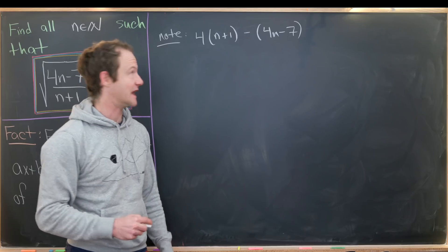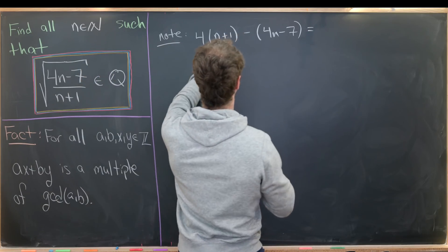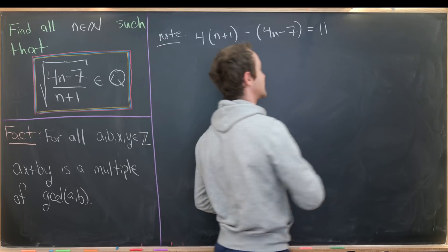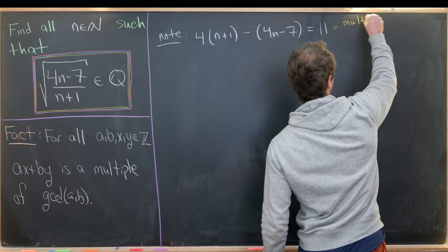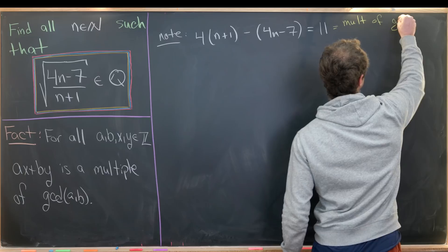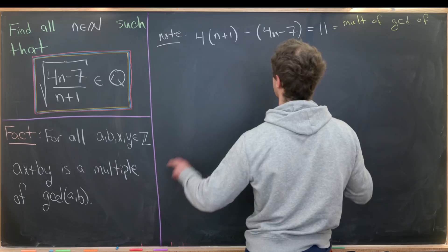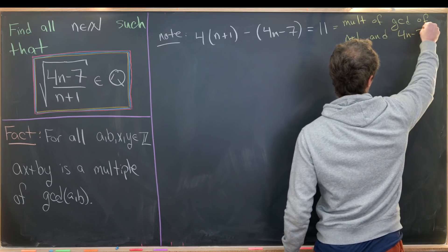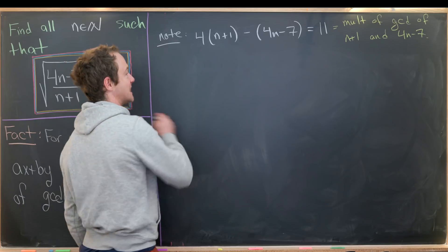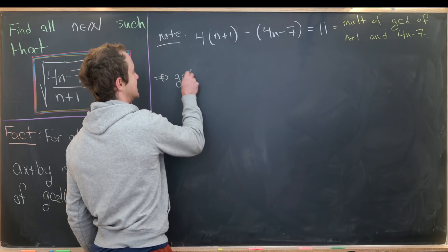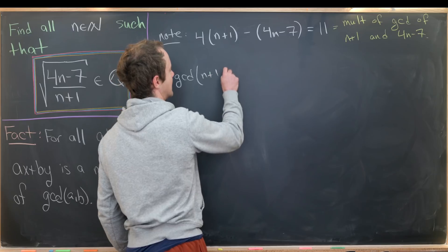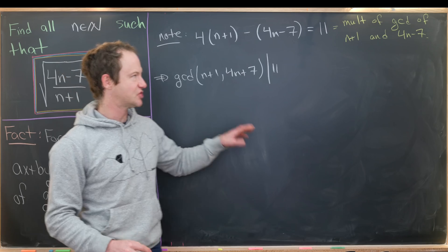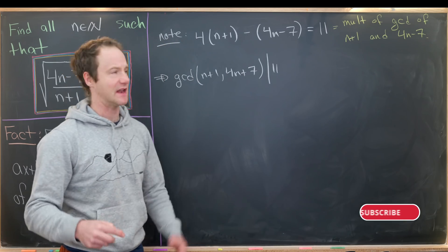which is the same thing as adding (4n-7) times negative 1, what will we get? We'll have 4 minus negative 7, or 11. So by our fact over here, this is equal to a multiple of the gcd of these two numbers, n+1 and 4n-7. But now we can rephrase that as follows: the gcd of n+1 and 4n-7 divides 11.